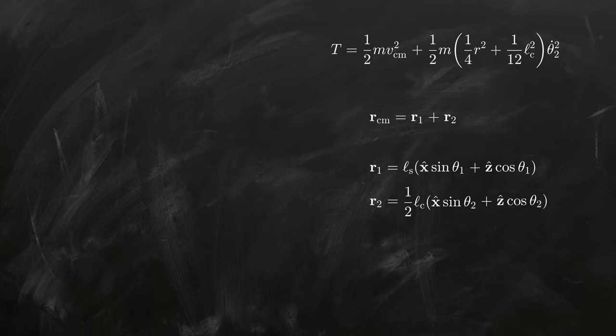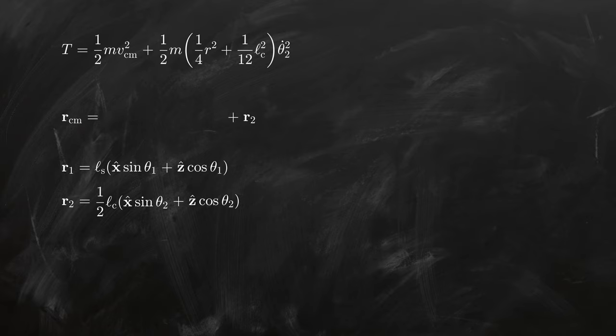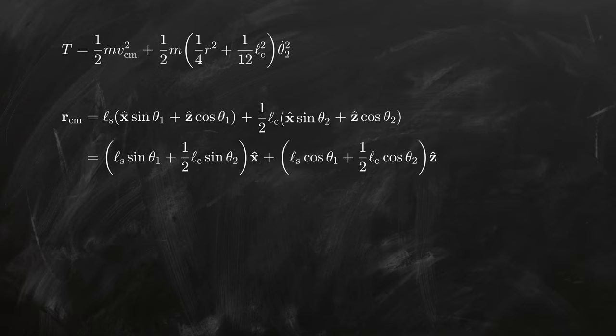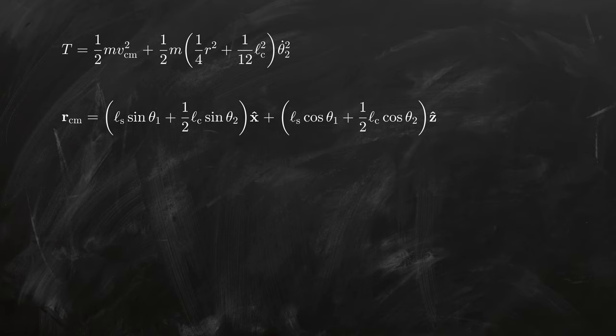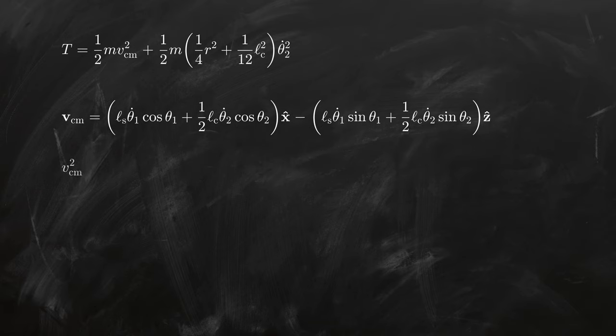Let's hide the diagram for now to create some space and combine these equations. Let's also factor the result in terms of the unit vectors. Now, to find the velocity we need to differentiate this position vector with respect to time, remembering that the angles themselves are of course functions of time. The squared speed is then simply the sum of the squared components.